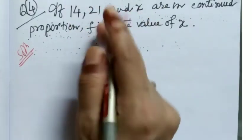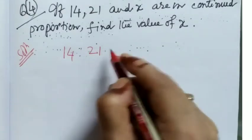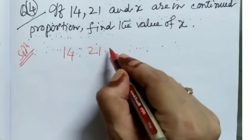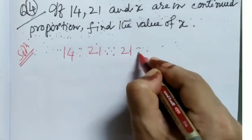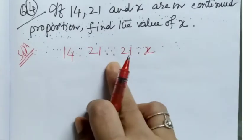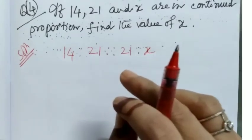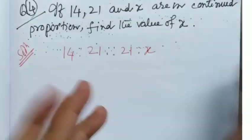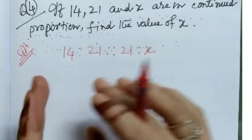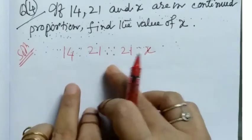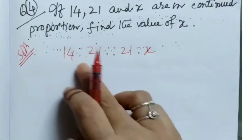Therefore here, 14, 21, x, middle term is 21. 14 is to 21, we can write like that. 14 is to 21 is proportional to 21 is to x. 14 is to 21 is as 21 is to x. Now we can find the value of x in two ways.